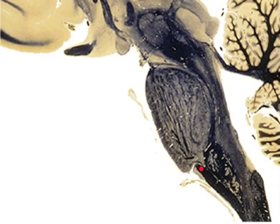This structure right here is the pyramids. The pyramids contain, for our concern, direct motor fibers, including the corticospinal tract.